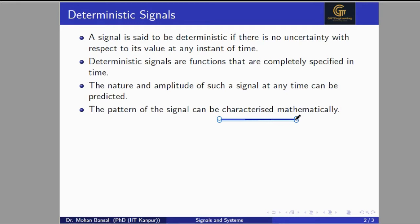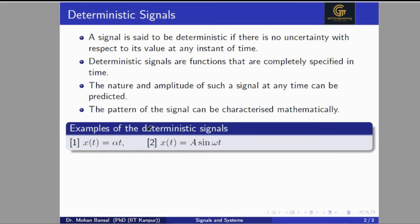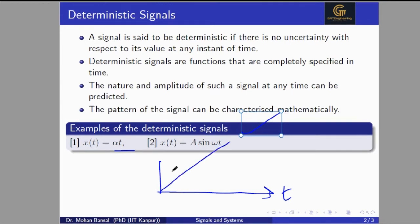αt is the ramp signal — we can predict its value at any time instant. At t equal to 5, we can say that it will be 5A. Examples of deterministic signals are A sin(ωt) and αt. Here we plot αt, and the signal will look like this. This is our x(t). We can predict the amplitude value x(t) at any time instant, so the signal is called a deterministic signal.